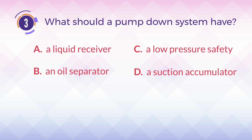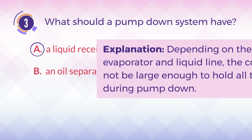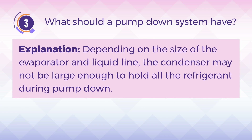The answer is A. A liquid receiver. Explanation: Depending on the size of the evaporator and liquid line, the condenser may not be large enough to hold all the refrigerant during pump-down.